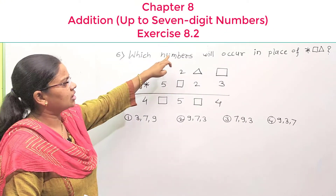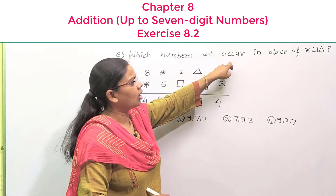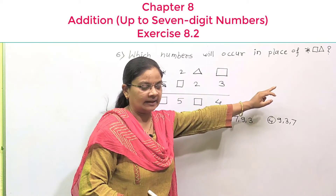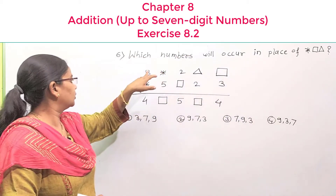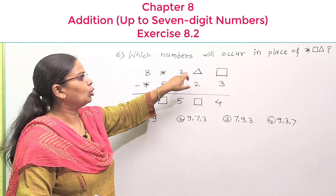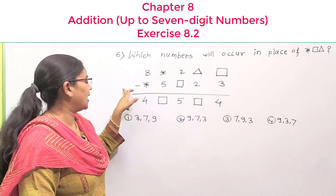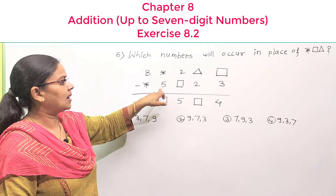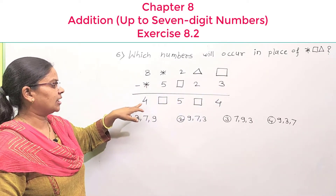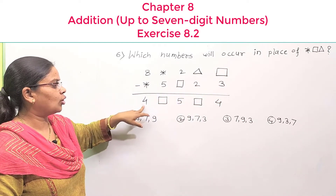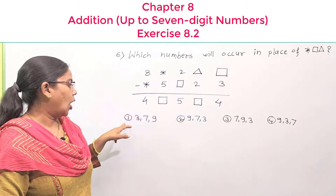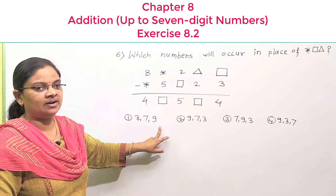We're going to see which numbers will be offered in place of star, square, and triangle. It will be that 8 star 2 triangle square minus star 5 square 2 3. Let all numbers generally be like 4 square 5 square 4. Option number 1: 3, 7, 9.